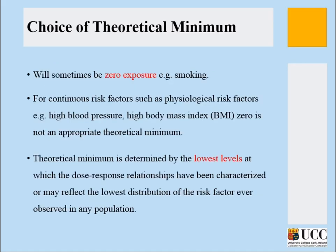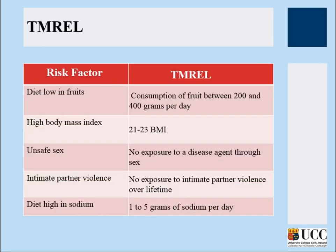These estimates do not need to add up to 100% because multiple factors work together simultaneously — a person who smokes can also use drugs and alcohol, and you cannot separate each factor. The total can exceed 100% by quite a margin. There is no strict distinction between risks and causes in this framework — they are considered together. For some factors the theoretical minimum is zero, such as smoking. But for blood pressure or BMI, zero is impossible, so the minimum is set to the lowest healthy level. For example, diet low in fruit: if you don't consume 200–400 grams per day, you contribute to some burden. If dietary sodium exceeds 1–5 grams per day, you are risking additional burden.